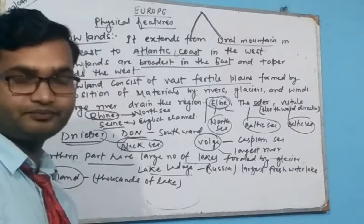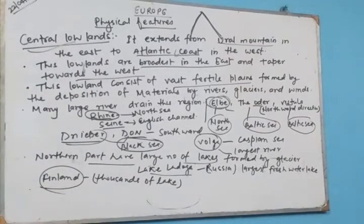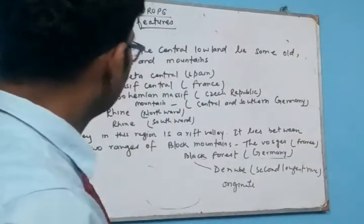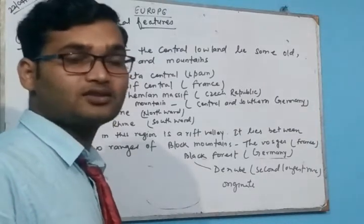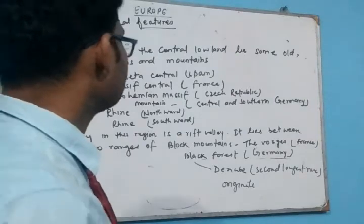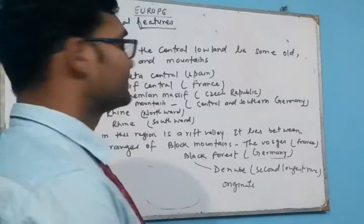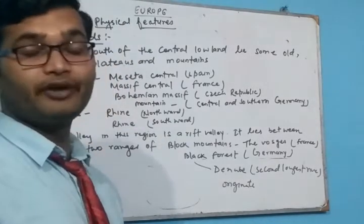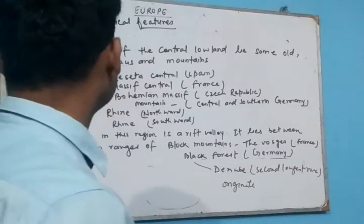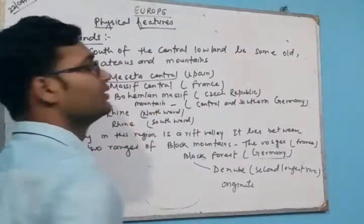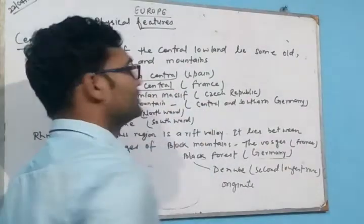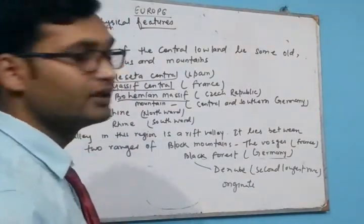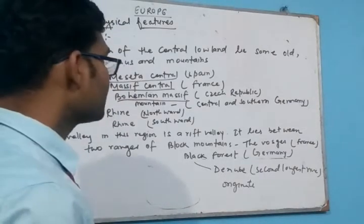The next topic is the Central Uplands. To the south of the Central Lowland there are some highlands known as the Central Uplands. In this upland there are very old mountains and plateaus. The plateaus include the Meseta Central, which lies in Spain; the Massif Central, which lies in France; the Bohemian Massif, which lies in the Czech Republic; and some mountains in central and southern Germany.